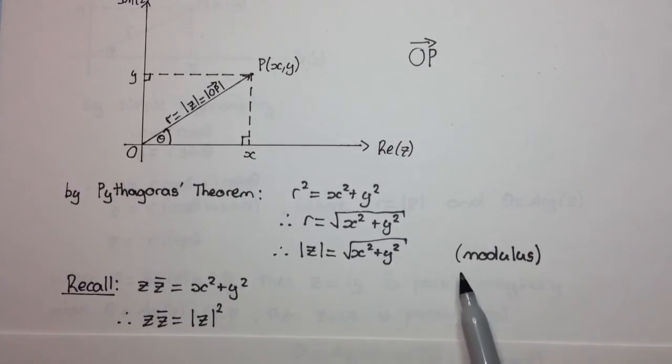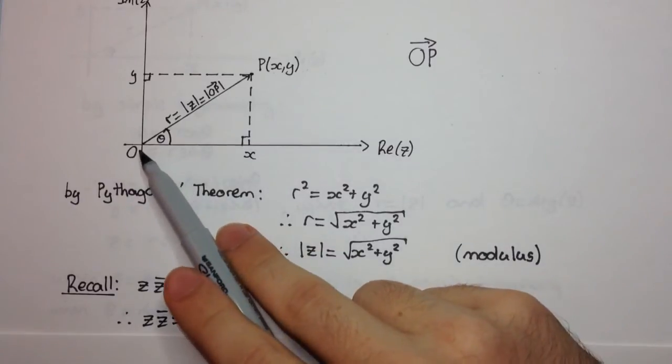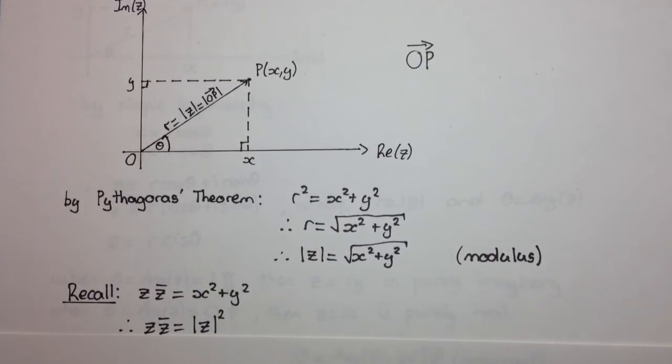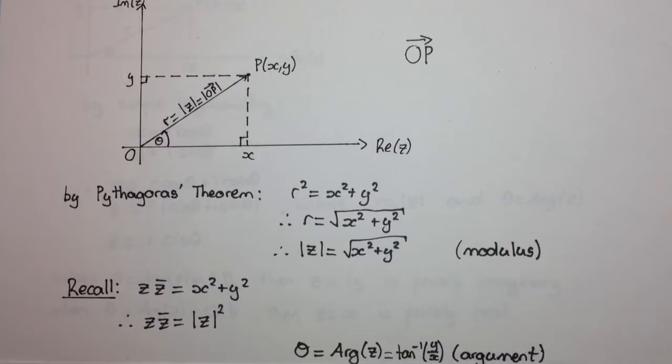Right, so now we've defined the modulus, which is the length of the vector. Now we need to define the second property, which is the direction of the vector, right? So we call this angle here theta. So this angle is called the argument of z. The argument of z, which we work out as tan inverse of y over x.